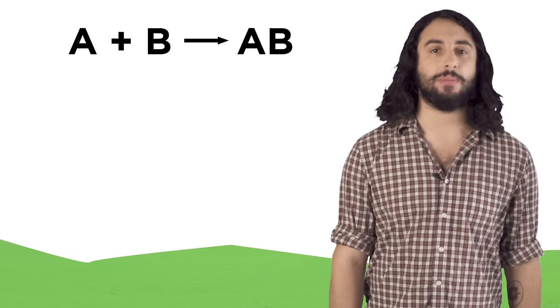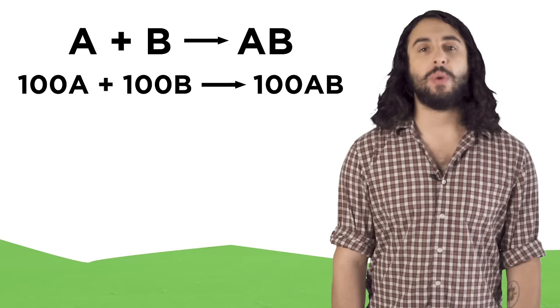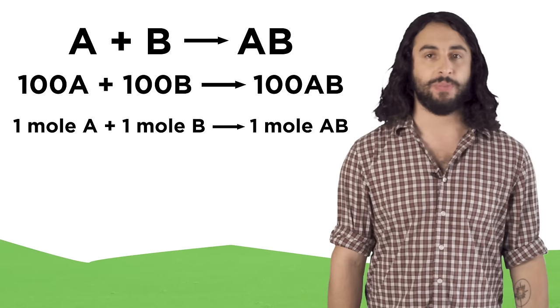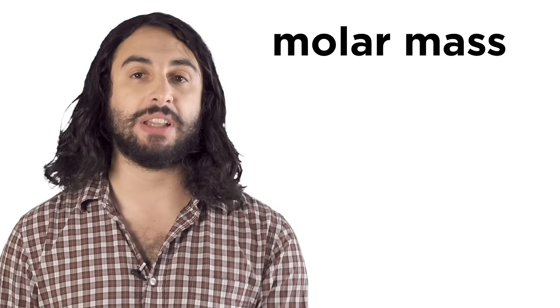So the mole is the way to go between atomic mass units and grams. Now when we look at a chemical reaction we can say 1A and 1B make 1AB, or we can say 100A and 100B make 100AB, or we can say 1 mole of A and 1 mole of B make 1 mole of AB, which will probably be an amount that we can weigh on a balance and do experiments with.